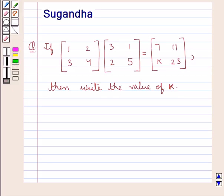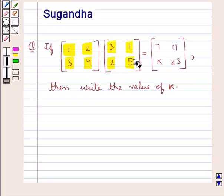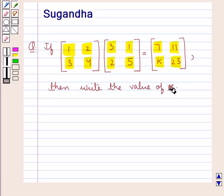If the matrix with elements 1, 2 in the first row and 3, 4 in the second row, multiplied by the matrix with elements 3, 1 in the first row and 2, 5 in the second row, is equal to the matrix with elements 7, 11 in the first row and k, 23 in the second row, then find the value of k.